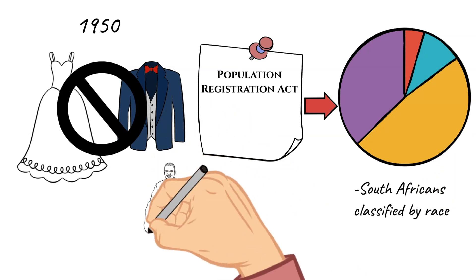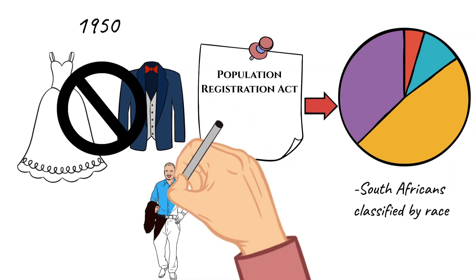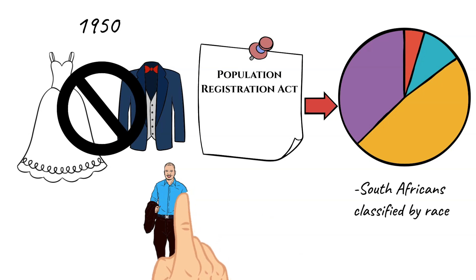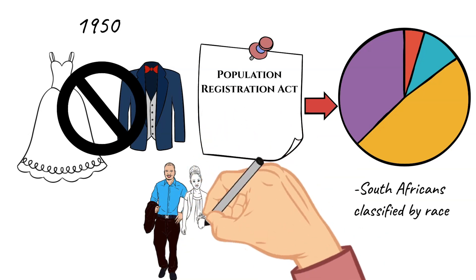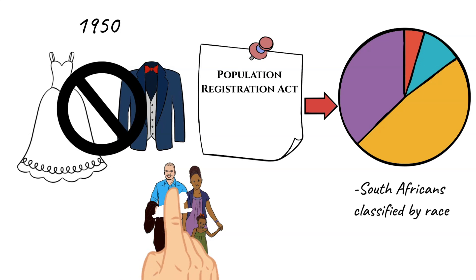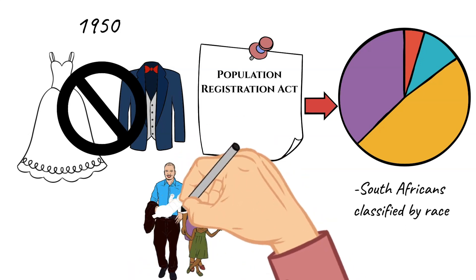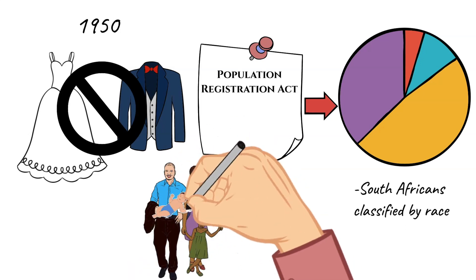In some very saddening cases, this legislation even split families. A parent could be classified as being of the white race while their children could be classified as not.